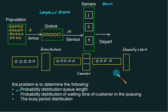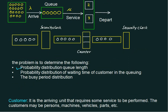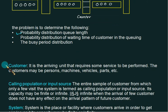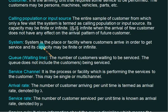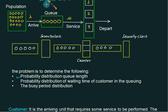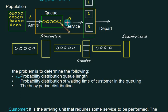Some terms normally used in the waiting line will be discussed. The very first term is a customer — a customer is an arriving unit that requires some service to be performed. The customer may be a person, a machine, vehicle, phone call, or anything. Calling population or input source is the entire sample of customers from which only a few visit the system. All people will not join your queue — only those who are interested will join. The system is the place or facility where customers arrive to get service, and its capacity may be finite. The system includes the persons standing in the queue plus the persons getting the service together.